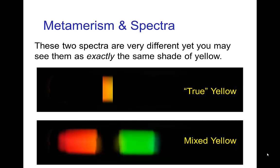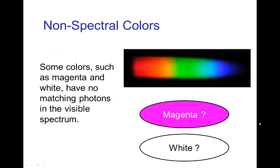When we see something as yellow, it's possible we're seeing true yellow — meaning just yellow photons. But it's actually more likely that when we're seeing yellow, we're seeing a mixture of red photons and green photons. These two spectra could not just both look like yellow, but look identically the same yellow. There are also colors we obviously see, yet when we separate the spectrum, we don't associate any particular photon with magenta or white — those are non-spectral colors.